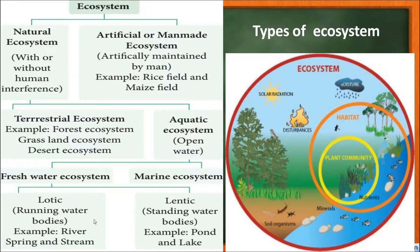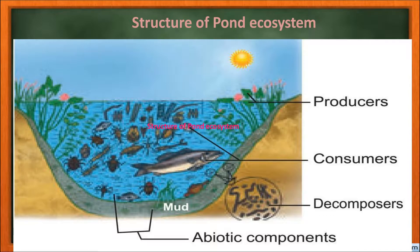Freshwater ecosystem is classified into lotic and lentic. Lotic means running water bodies — the water runs in rivers, streams, or springs. Lentic ecosystem is a standing water body, such as ponds and lakes. Now, the structure of the pond ecosystem is a very important topic and is a classical example of a natural, aquatic, freshwater, lentic type of ecosystem.